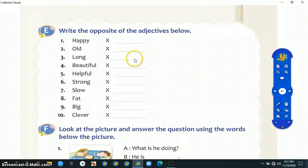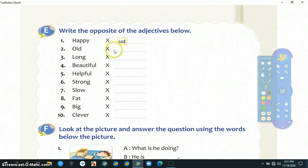Kita lanjutkan ke halaman selanjutnya. Write the opposite of the adjectives below. Opposite itu diingat-ingat ya, lawan kata. Kalau happy berarti lawan katanya adalah sad. Kalau old lawan katanya adalah young. Long lawan katanya adalah short. Beautiful lawan katanya adalah ugly. Helpful lawan katanya adalah lazy. Strong lawan katanya adalah weak. Slow lawan katanya fast.